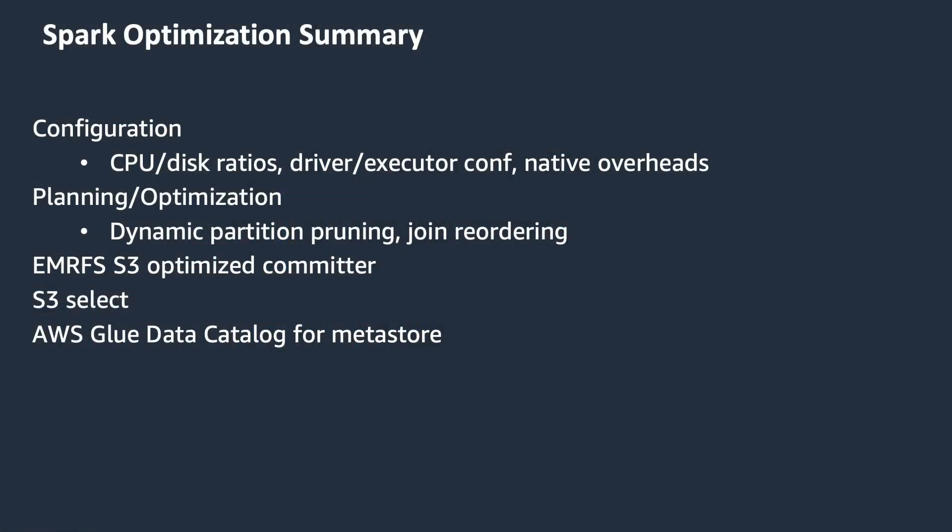In addition to runtime improvements, the Amazon EMR team has worked on several improvements to Spark performance on EMR. That includes configuration adjustments for CPU-to-disk ratios, driver and executor configuration that comes by default, as well as planning and optimization for your queries — which includes features like dynamic partition pruning, join reordering, and flattening of scalar subqueries. Customers can also take advantage of other Spark optimizations provided out-of-the-box within EMR clusters.